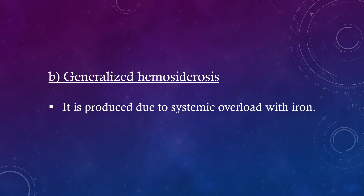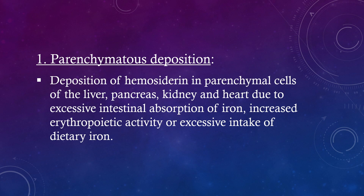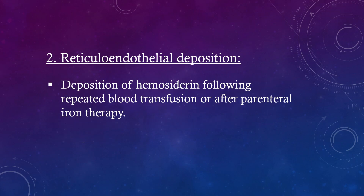Generalized Hemosiderosis is produced due to systemic overload with iron. First, parenchymatous deposition: deposition of hemosiderin in parenchymal cells of the liver, pancreas, kidney, and heart due to excessive intestinal absorption of iron, increased erythropoietic activity, or excessive intake of dietary iron. Next, reticuloendothelial deposition: deposition of hemosiderin following repeated blood transfusion or after parenteral iron therapy.